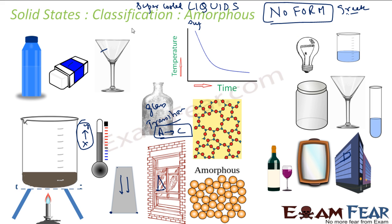When you cool an amorphous solid, the temperature-time graph looks different from that of a crystalline solid. With crystalline, there is a period where temperature remains unchanged during solidification, but the amorphous graph is different. Also, unlike crystalline solids which are anisotropic, amorphous solids are isotropic — because the particle arrangement is completely haphazard. If you measure properties from any direction, you don't know what arrangement you'll encounter. That is why physical properties like electrical conductivity or refractive index are almost the same in all directions.